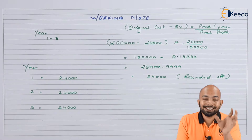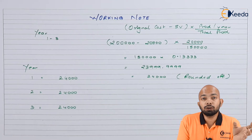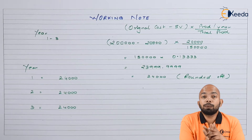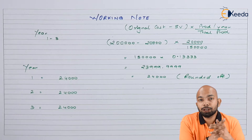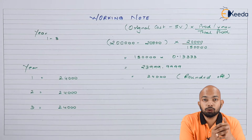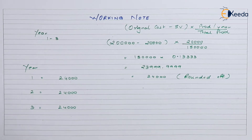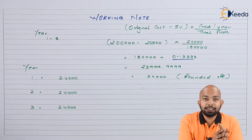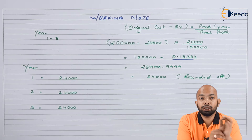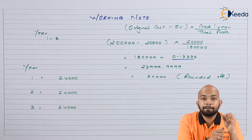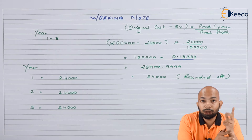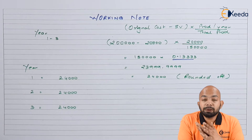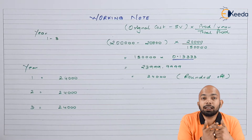For years 1, 2, and 3: original cost Rs 2 lakh minus scrap value Rs 20,000 gives Rs 1,80,000. This is multiplied by production per year of 20,000 divided by total production 1,50,000, which gives 0.1333. Multiplying 1,80,000 by 0.1333 gives Rs 23,999.99, rounded off to Rs 24,000. So depreciation is Rs 24,000 per year for years 1, 2, and 3. Similarly, we will calculate for the next category.